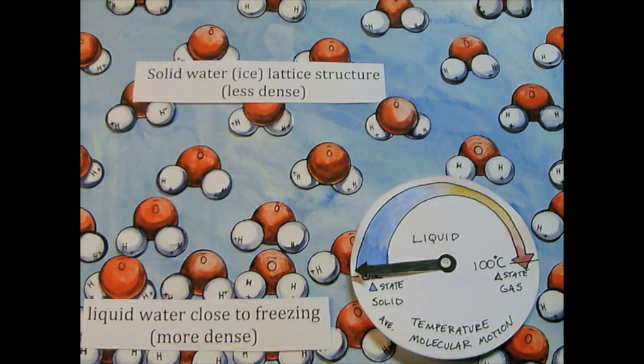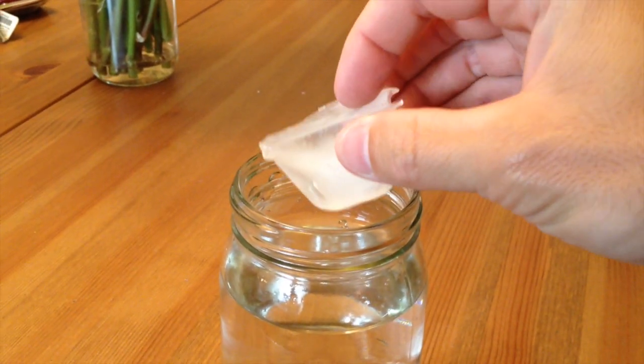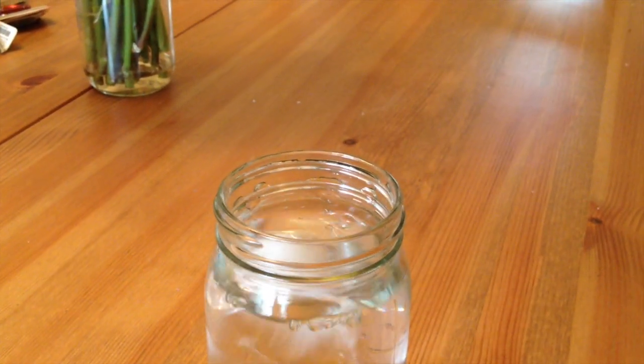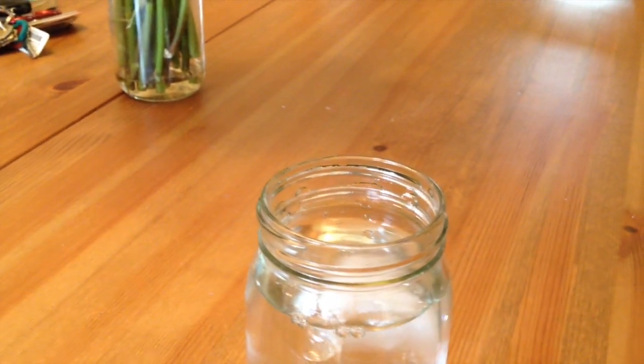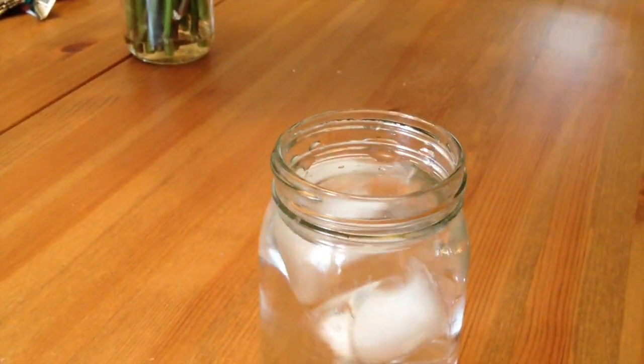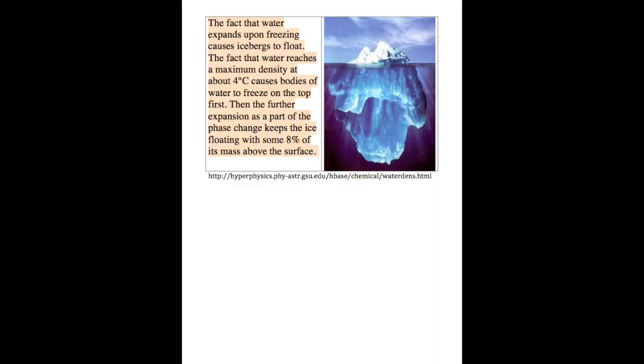Ice floats to the top and insulates the water beneath from bitter temperatures. This means when the top of a lake freezes, life can still survive beneath the ice.